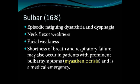Bulbar myasthenia is the form associated with respiratory involvement — this is the most serious aspect, known as myasthenic crisis, where patients come in with severe shortness of breath. These patients usually have bulbar involvement: slurred speech and difficulty swallowing. Roughly 20% will have extremity weakness. To summarize: approximately 60% present with ocular manifestations, 20% with bulbar, and 20% with extremity weakness.